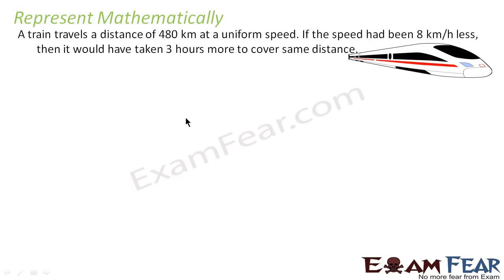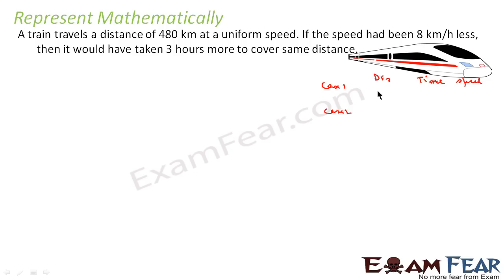Let's take one more example. A train travels a distance of 480 km at a uniform speed. If the speed had been 8 km/h less, it would have taken 3 hours more. We consider two cases. In Case 1: distance is 480 km, speed is x km/h, and time is t hours.